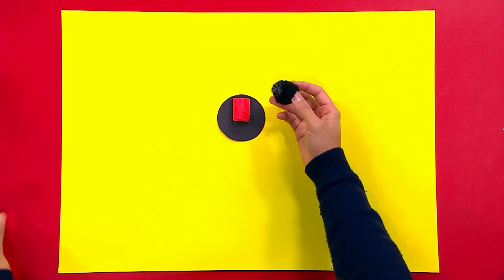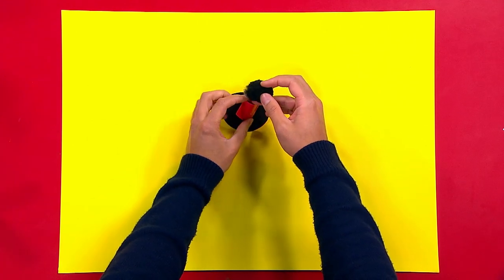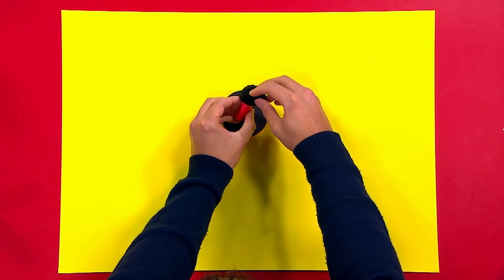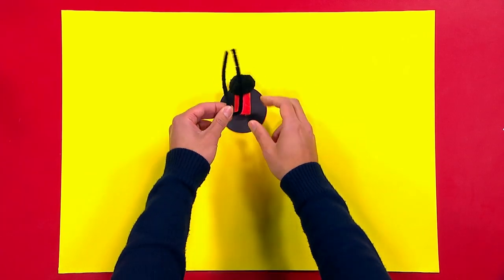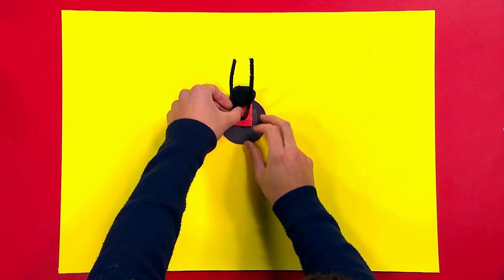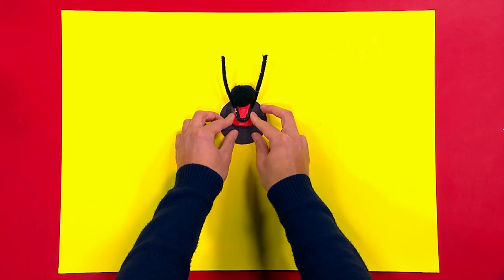Glue one end of the pom pom and attach it to the top of the thumb holder to make the head. Bend the pipe cleaner in half, fold the ends, and then tape it to the back of the pom pom as the antennae.